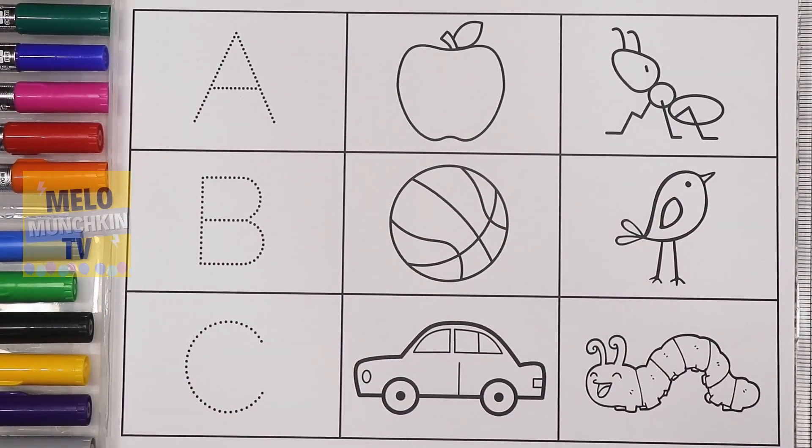Hello kids! So today we'll learn alphabets A, B and C along with the objects starting with these letters A, B and C. So let's get started.